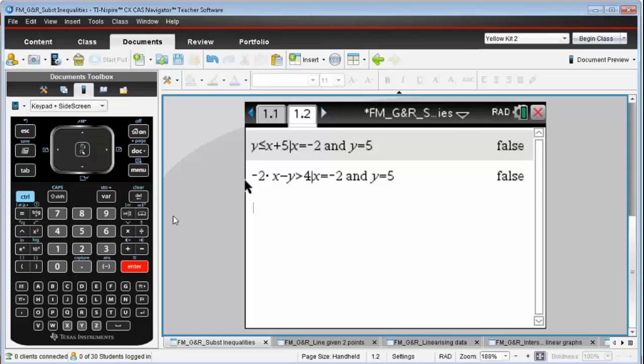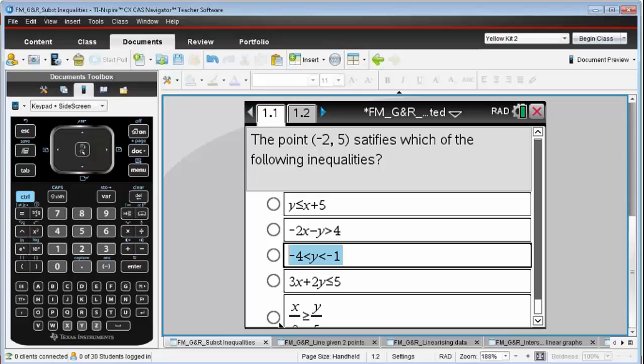And on that goes. Going back to the next one, it's negative 4 is less than y is less than negative 1. And I'm going to put that in manually.